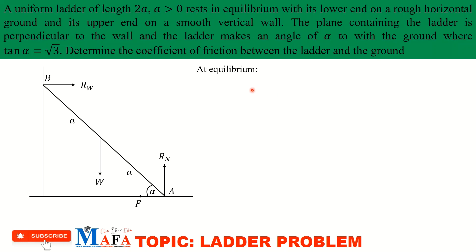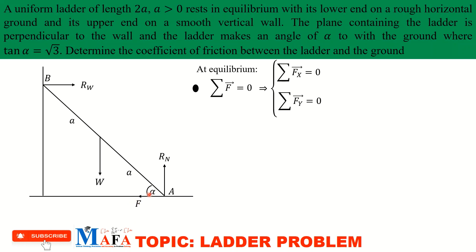At equilibrium we use two concepts. The first is that the sum of forces equals zero. We have vertical forces (y-direction) and horizontal forces (x-direction), so the sum of horizontal forces is zero and the sum of vertical forces is zero. The horizontal forces are friction F and the reaction at the wall R_w; since they act in opposite directions, one is positive and one is negative.